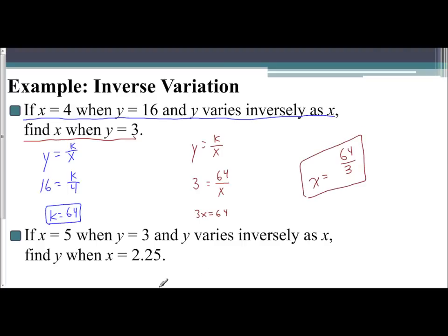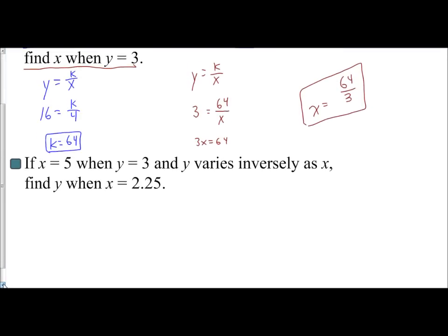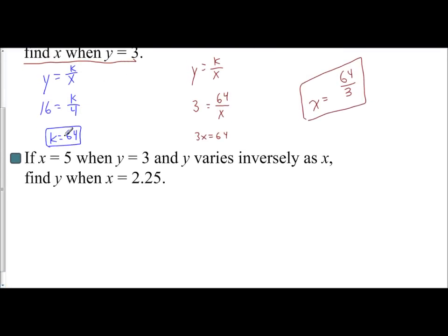Let's take a look at number 2. If x equals 5 when y equals 3, and y varies inversely as x, find y when x equals 2.25. So here we go. We know it's an inverse variation. So y equals k over x. You know y is 3. You know x is 5. So to solve for k, I would multiply by 5. So k is 15.